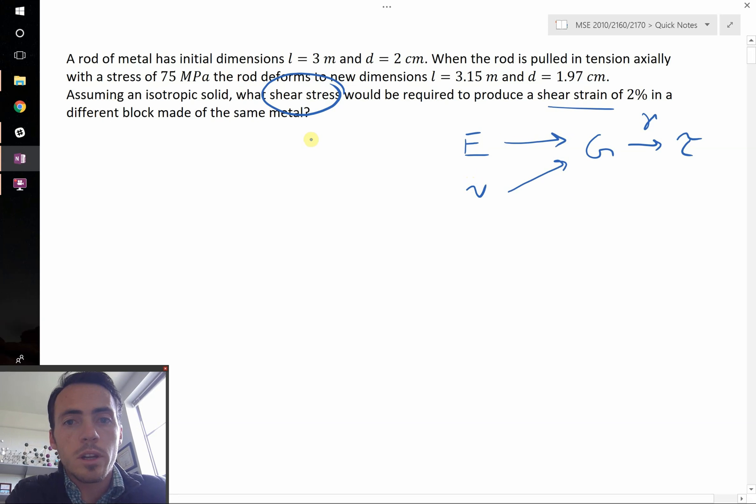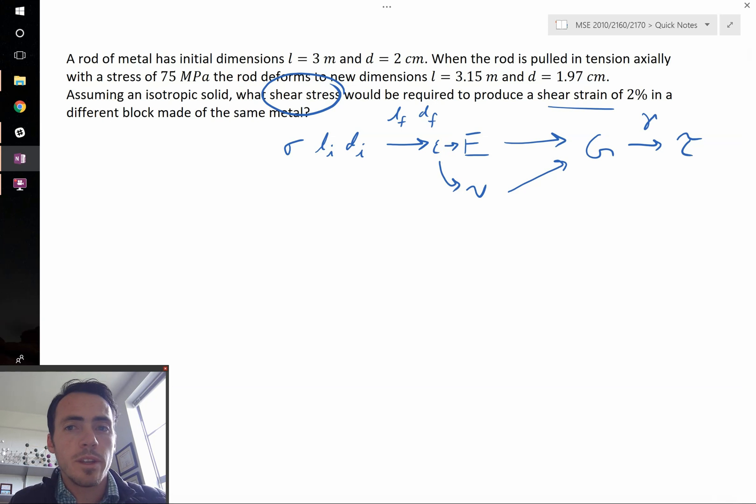So how do we get Young's modulus? Well, we started out with stress and our dimensions. We had L_i and we had D_i, so we're going to take L final and D final, and we're going to turn that into strain, which can give us that. Strain can also give us Poisson's ratio if we know the strain in the longitudinal and transverse directions. So that's the approach in this problem. Now that we know that, we can just dive in and start calculating these things.